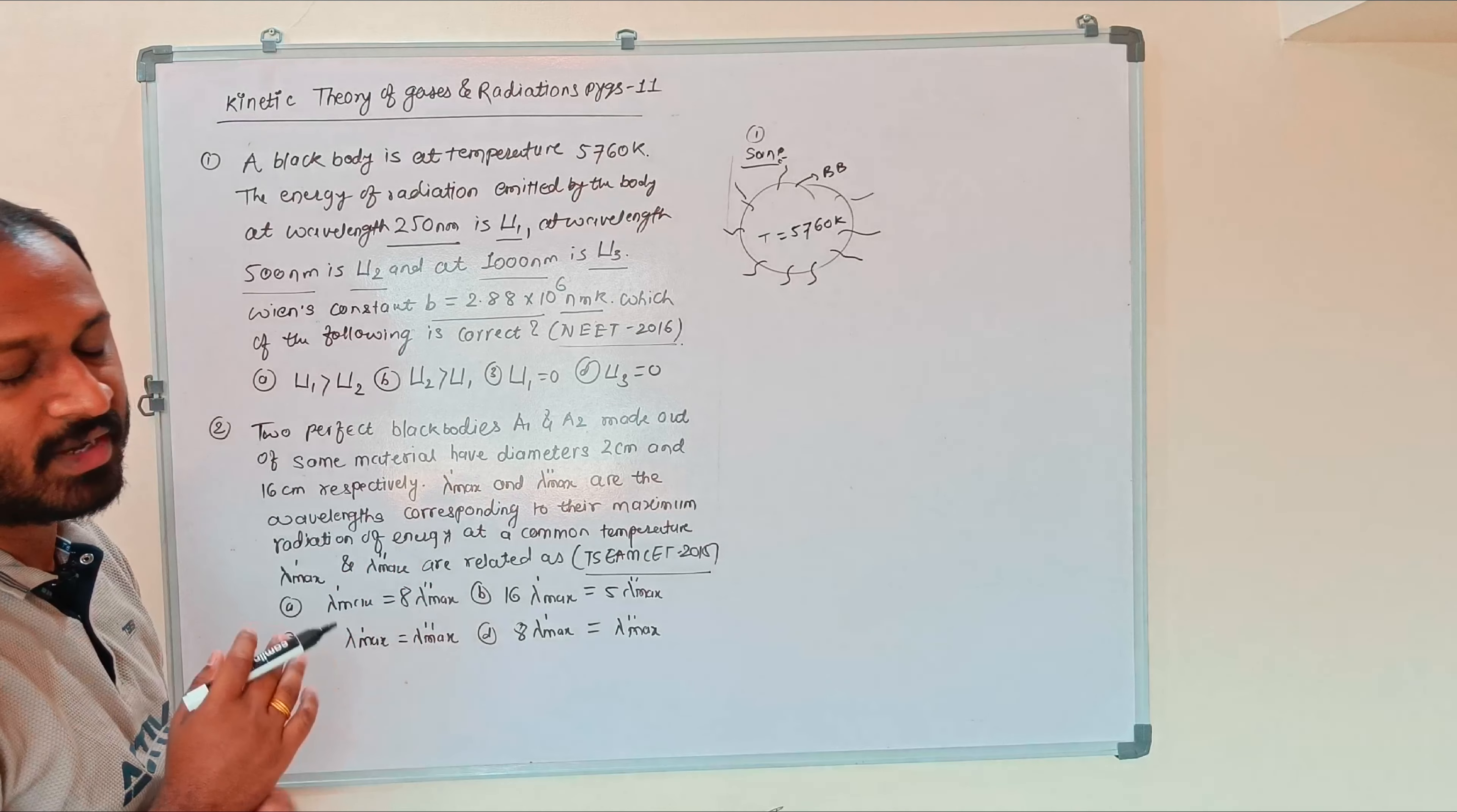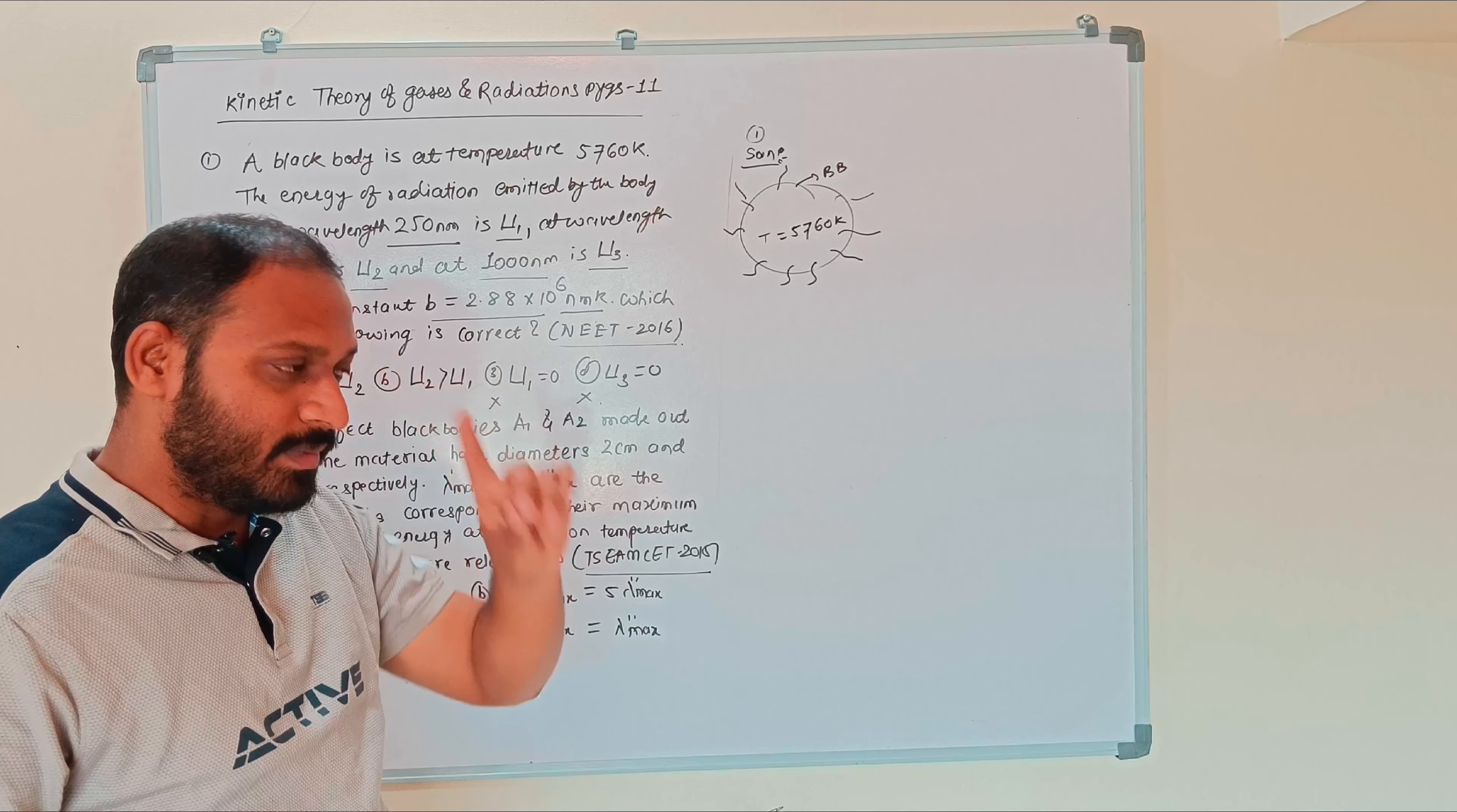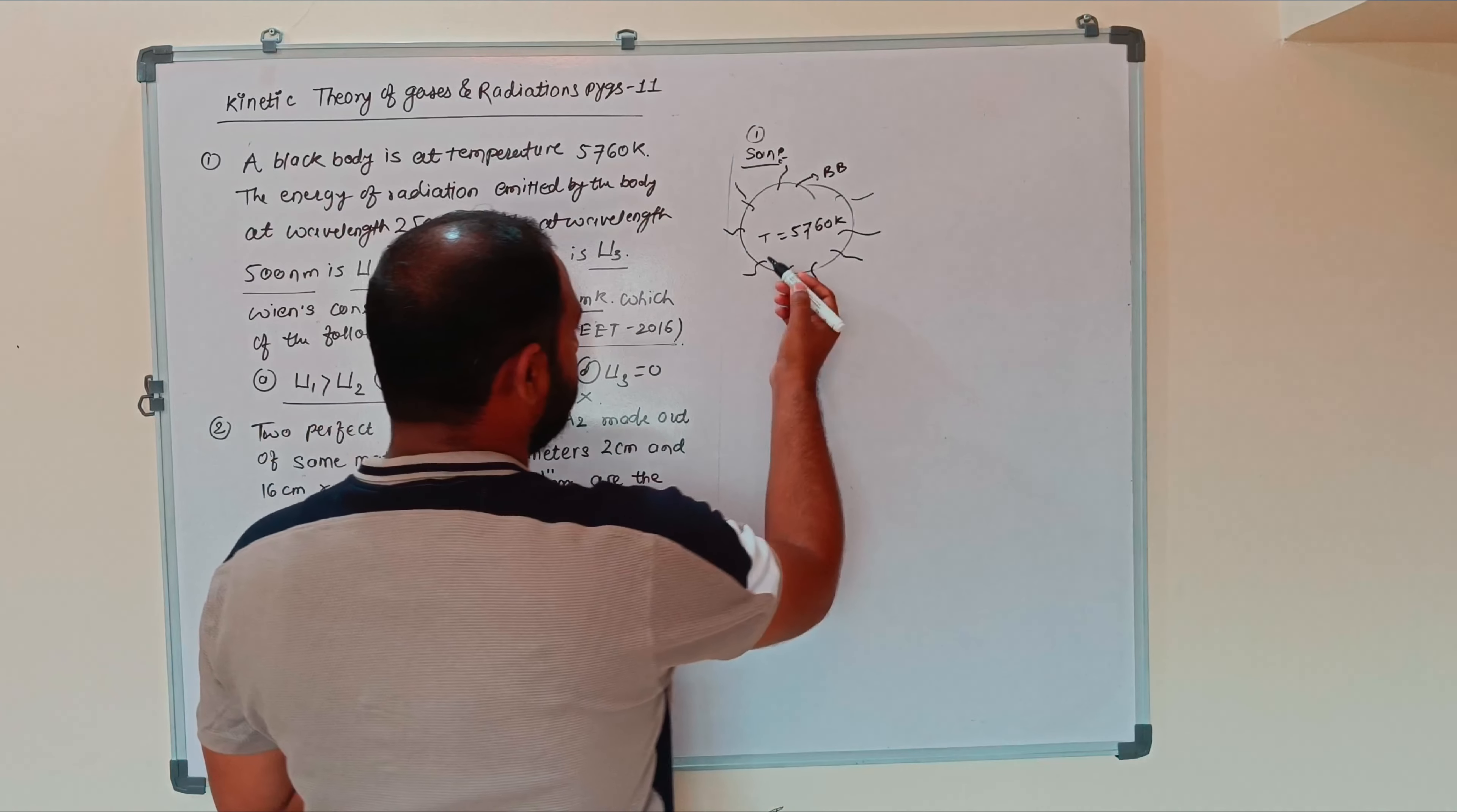Is U1 greater than U2? The key point is that the black body emits all possible wavelengths. Therefore the possibility of energy zero is not possible. When energy zero is not possible, we can eliminate that option.